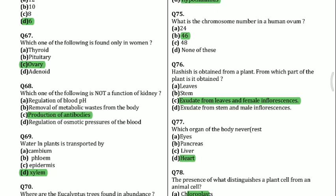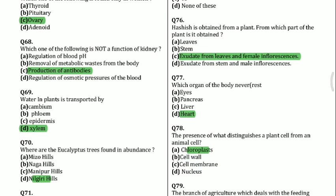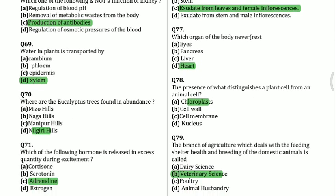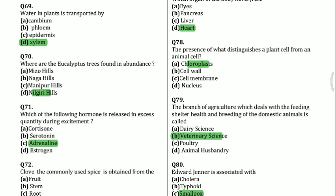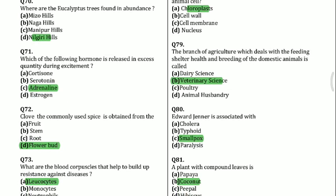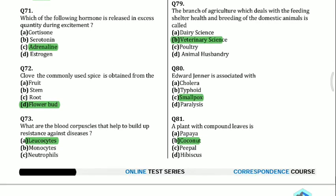Question 68: Which one of the following is not a function of the kidney? Production of antibiotics. Question 69: Water in plants is transported by xylem. Question 70: Where are eucalyptus trees found in abundance? Nilgiri Hills. Question 71: Which hormone is released in excess quantity during excitement? Adrenaline. Question 72: Clove, the commonly used spice, is obtained from the flower bud.